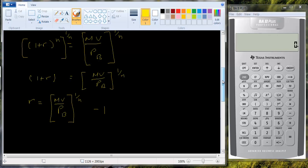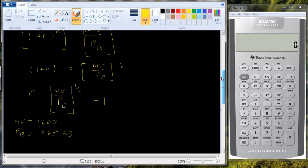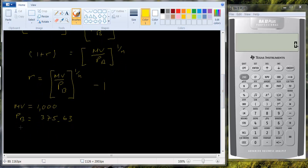So let's take a look at an example. Suppose the maturity value for the bond is $1,000. The current price of the bond is $375.63. And the bond matures in 10 years. So n equals 10. So what's the return going to be? What's the yield going to be?